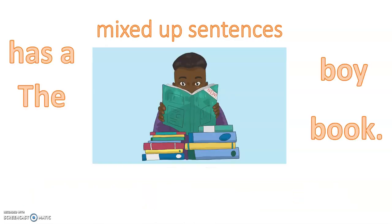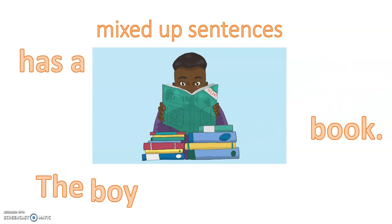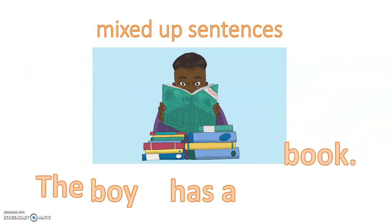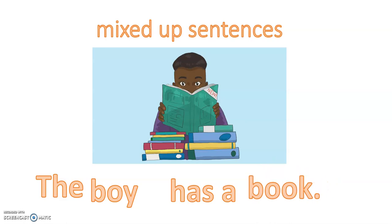So this mixed up sentence is: the boy has a book. Pause the video now and write your sentence. And when you've completed writing, start the video again to see if you have the correct sentence. Does your sentence look like this? The boy has a book. It does? Well done.